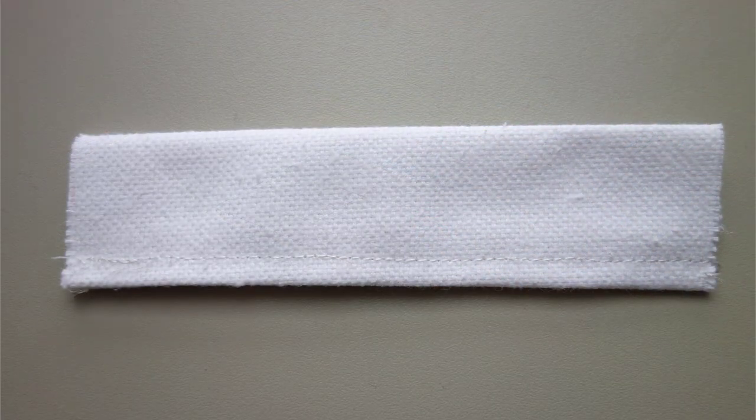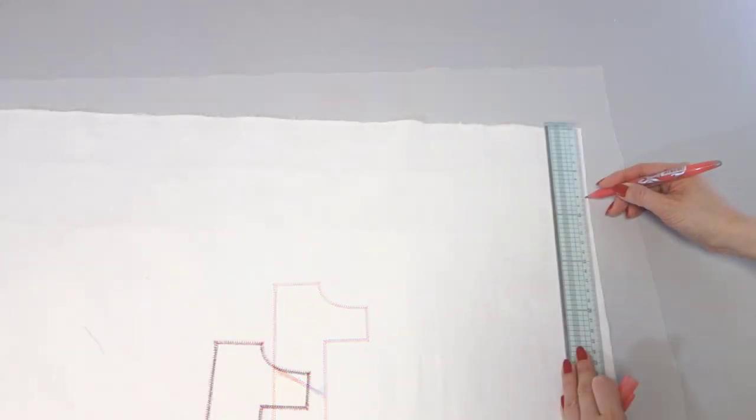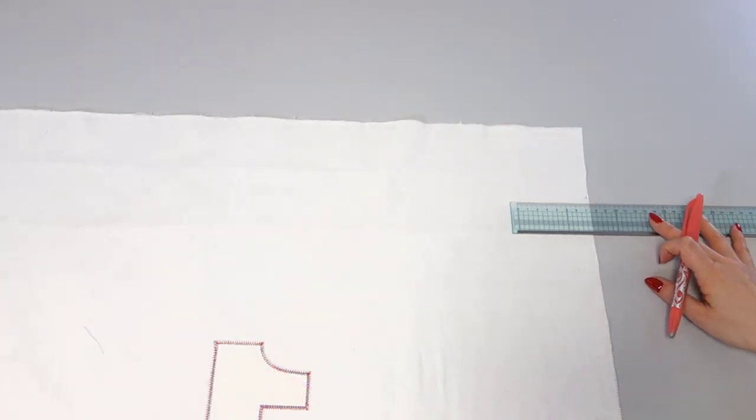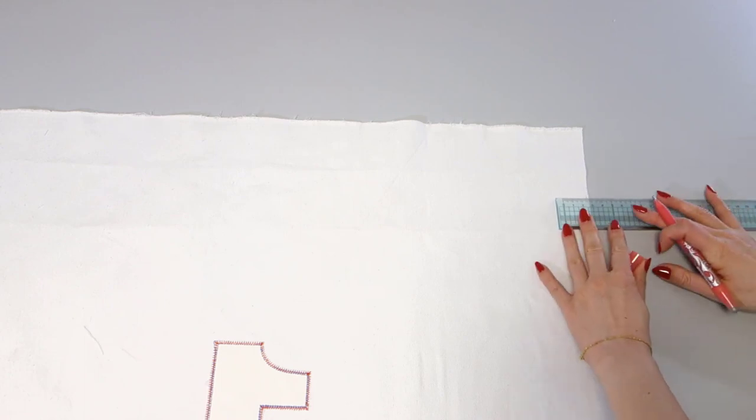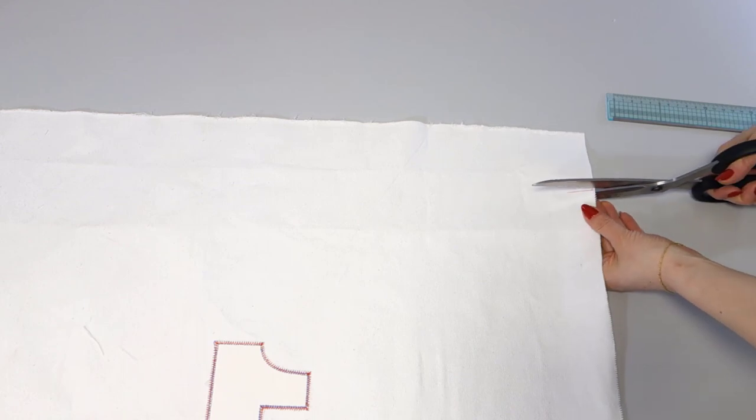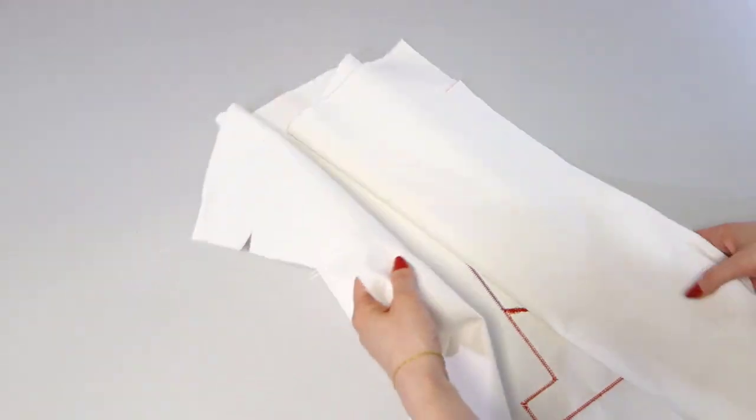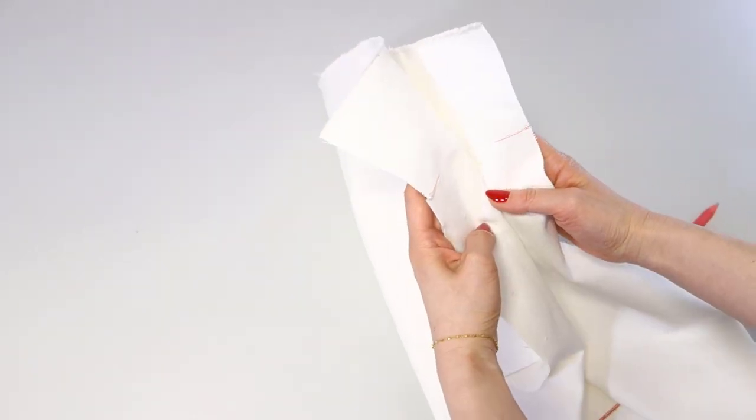Leave this aside for now and let's go back to the main fabric. Mark a point with an erasable pen at 8 cm, that is 3.14 inches from the top of the wrong side. Make a 2.5 cm cut there. Repeat the same process for the other side. This is the piping through which the drawstring will go through.